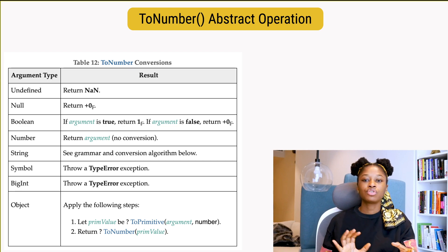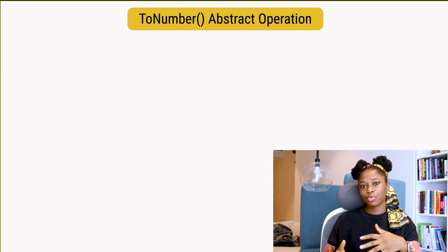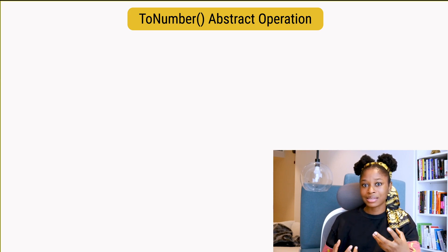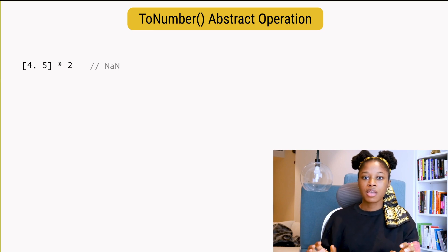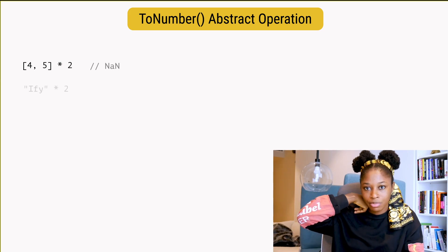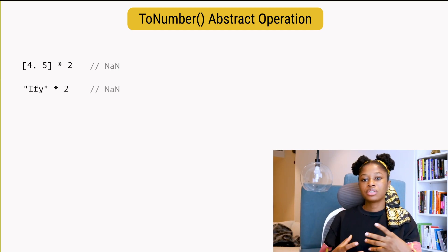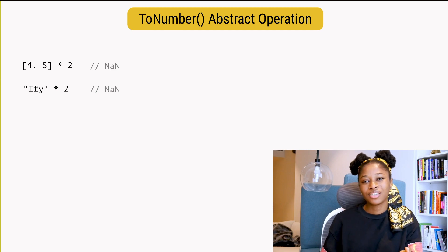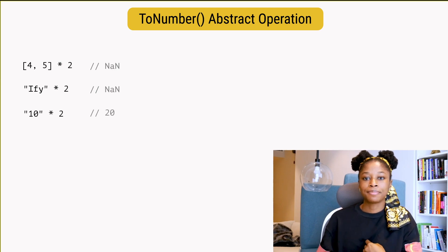For strings, it goes through a conversion algorithm. If the ToNumber abstract operation receives a value that is not a numeric string literal as an argument, it results in NaN. If you try to do arithmetic with a non-numeric string, it will result in NaN. But if the string contains a numeric value, the result will be a number.